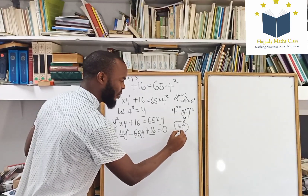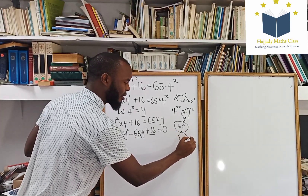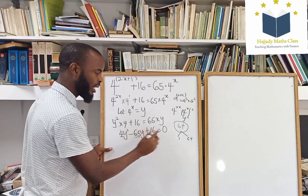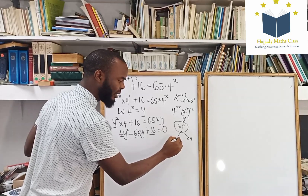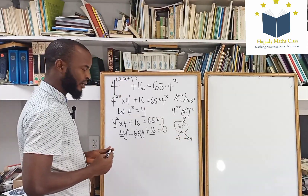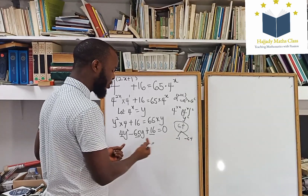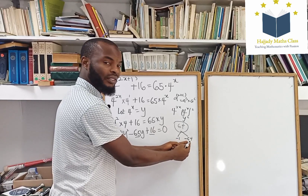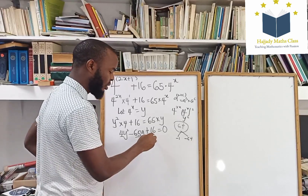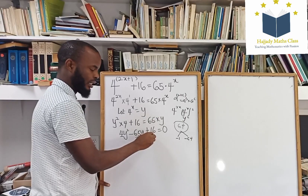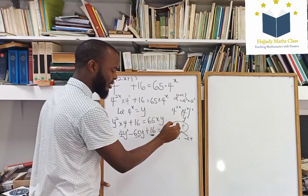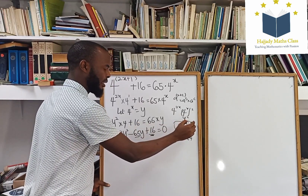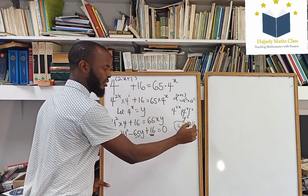The factors are 1 and 64. For the sum to be negative, both must be negative: negative 1 and negative 64. Negative 1 plus negative 64 gives negative 65, and negative 1 multiplied by negative 64 gives positive 64. I got 64 by multiplying the coefficient of y squared, which is 4, by the constant, which is 16.